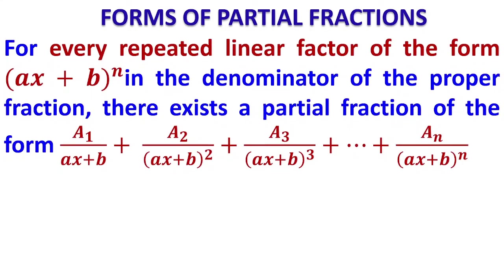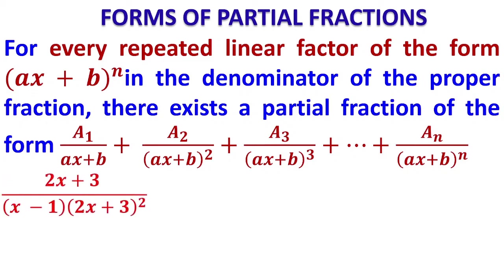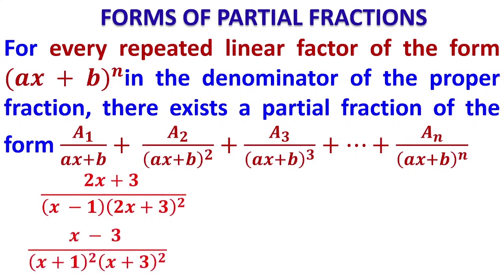In the previous type, each linear factor appeared only once (non-repeated). Now we consider Type 2: repeated linear factors. For example, (2x + 3)/[(x - 1)(2x + 3)²] and (x - 3)/[(x + 1)²(x + 3)²]. The rule is: for every repeated linear factor, you need that many partial fractions. If it is squared, two partial fractions; if cubed, three; and so on.